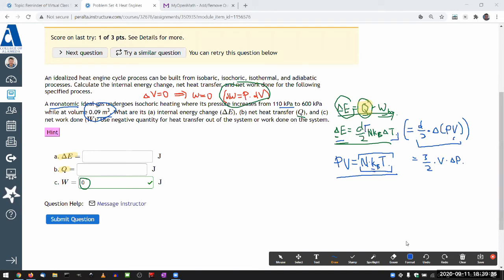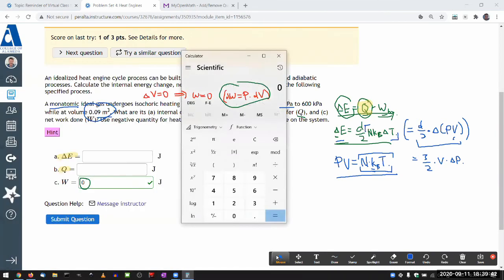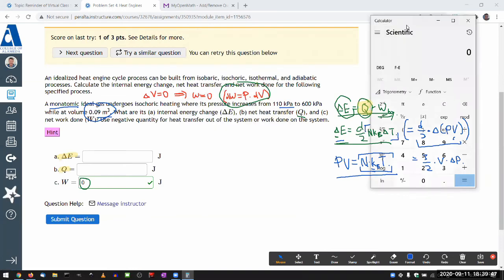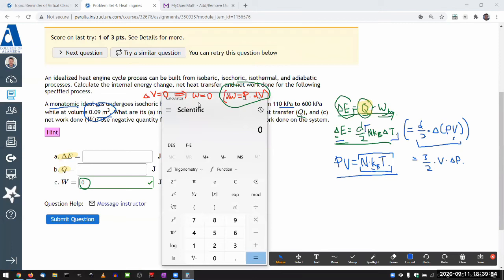It looks like all the numbers are given in SI units, so let me just put in the numbers in SI units and type it in there. So pressure, let me do this. Three halves times the volume. Cubic meter is the basic SI unit, so I'll just type that in 0.09. That's the volume times change in pressure.